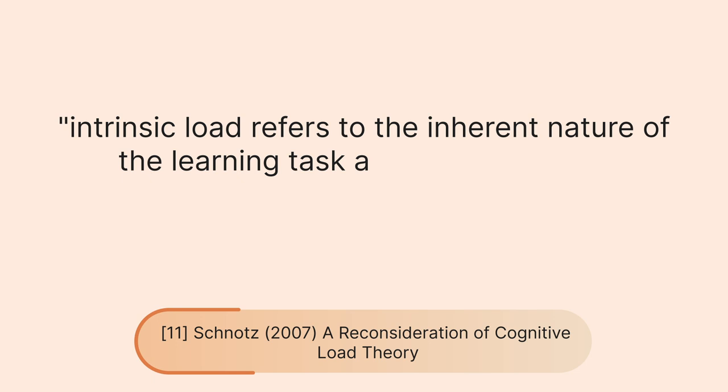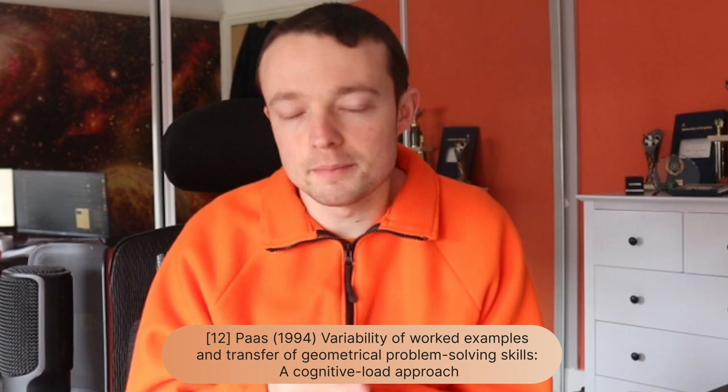The focus up until the 1990s was all about reducing extraneous load, because intrinsic load refers to the inherent nature of the learning task and was assumed to be fixed. However, studies looking at variability found that increased variability resulted in better transfer — but more variability would have meant more cognitive load, more extraneous or bad load. So it shouldn't have helped. But it did. This is where germane load was introduced to the theory — a good version of cognitive load.